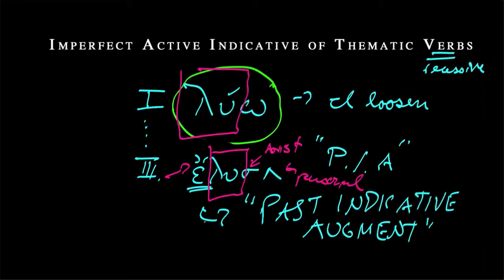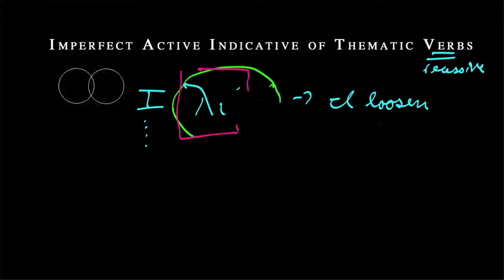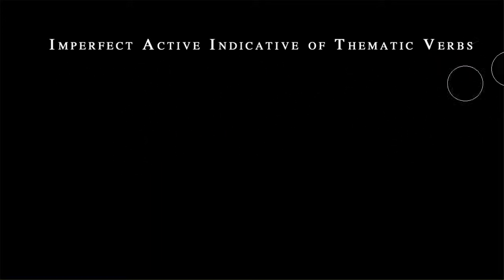Past indicative augment. I might call it PIA for short. So the PIA is this epsilon that precedes the stem. So again, λυ is the stem. ο is the personal ending. Here we have the same thing. λυ is the stem. This is the PIA, the past indicative augment. And then this sigma came into the aorist. And then ultimately, this alpha was the personal ending. Again, I'm getting ahead of myself because we haven't even learned the aorist yet. But this principal part that you've already committed to memory, this is what's happening. We're attaching things to this stem.